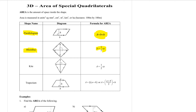We're going to call the diagonals x and y. To find the area of a rhombus with its diagonals, we go half of x times y. It's actually exactly the same formula for a kite — x and y are again the diagonals, and the formula for the area of a kite is also half x times y.